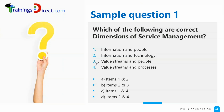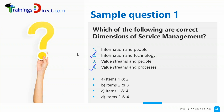For information and technology, and value streams and processes — these are correct. The other ones are not correct. Very simple question in the exam; the questions are usually simple. Sometimes you may have some text and you have to identify which dimension it is. So yeah, the answer is correct.